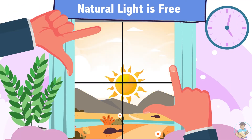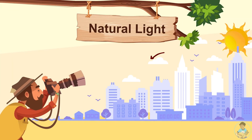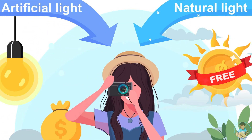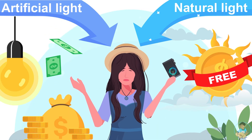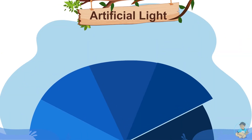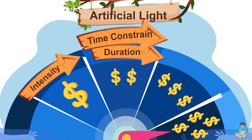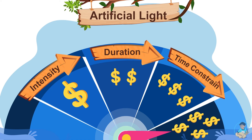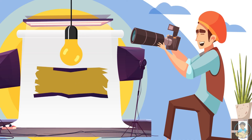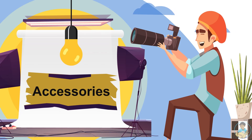The biggest advantage of natural light is that it is freely available. All you need is a camera and a good understanding of how to use the light source. Photographers who mainly use natural light may not end up spending a lot of money on a light setup. Artificial light, on the other hand, is a costly affair, but allows full control of intensity, duration, and the amount of light, with no time constraint. Photographers who use artificial light may need a lot of gear, like studio strobes, speedlights, fill lights, backlights, and other accessories.